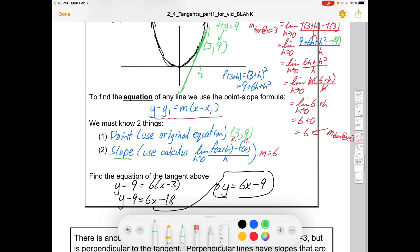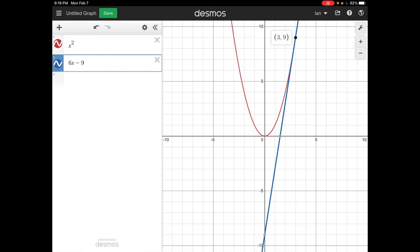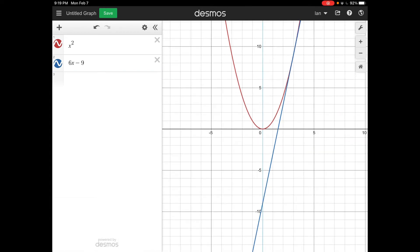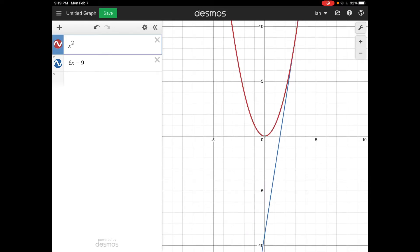But seeing is believing, so let's take a look at Desmos. There's y equals x squared. Let's get it to graph 6x minus 9. Does that really look like it's the tangent at x equals 3? Well, yeah, it connects. And it really does look tangential to the graph. So things are all good. We know that we've done a good job of finding that equation of the tangent.